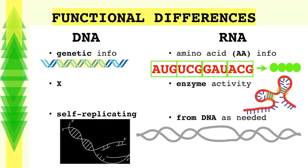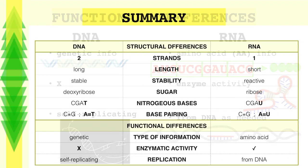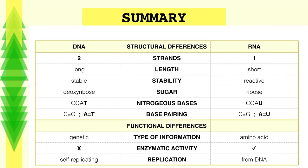Lastly, DNA can replicate itself in a process called DNA replication. And RNA is created using one of the DNA strands as a template, so it is not self-replicating. And we're done! Here I've made a summary table for your convenience — you can use it whenever you are in doubt, and also as a quick reminder right before a big test.